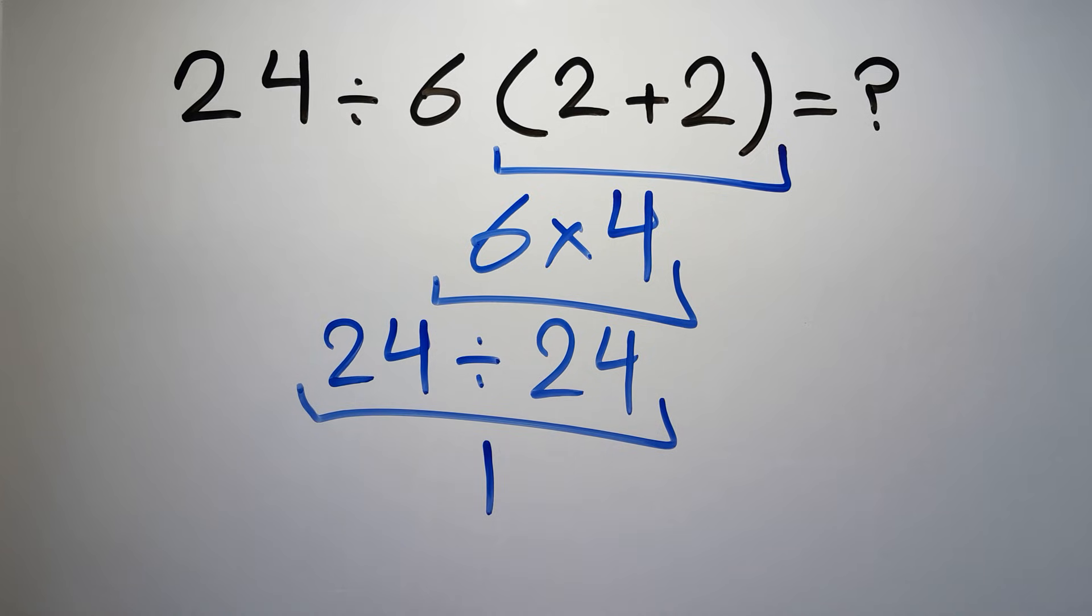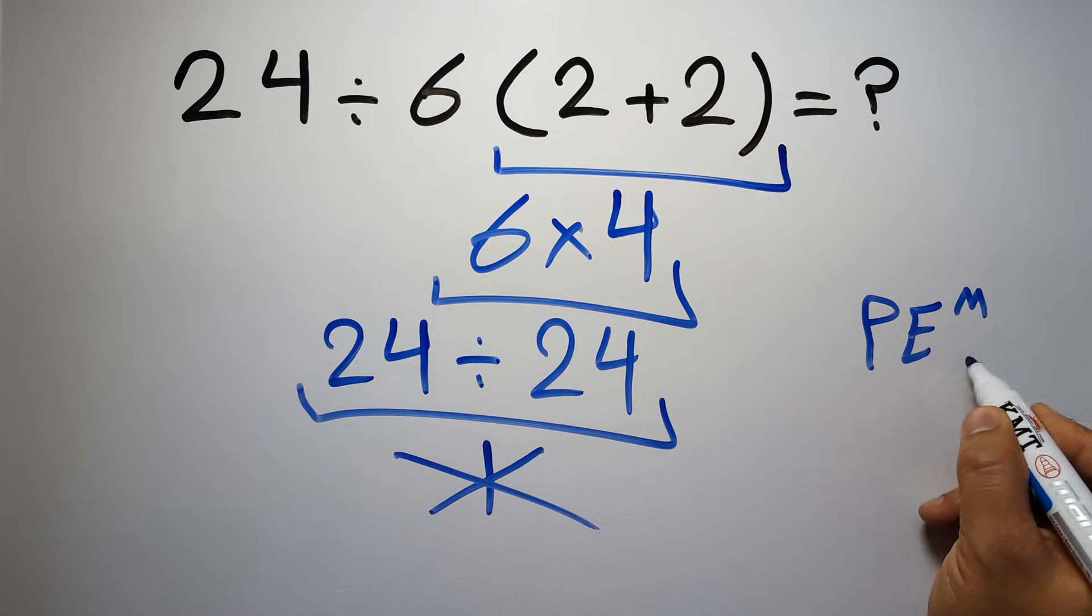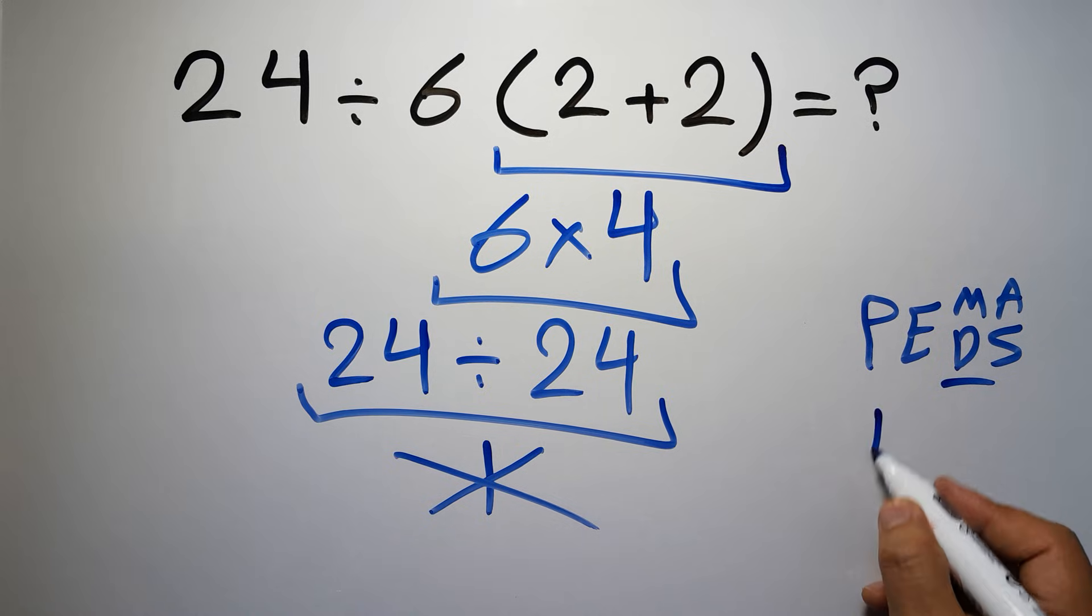But this answer is not correct because according to the order of operations, first we have to do parentheses, then exponents, then multiplication or division, and finally addition or subtraction. Remember that multiplication and division have equal priority and we have to work from left to right, and the same applies to addition and subtraction.